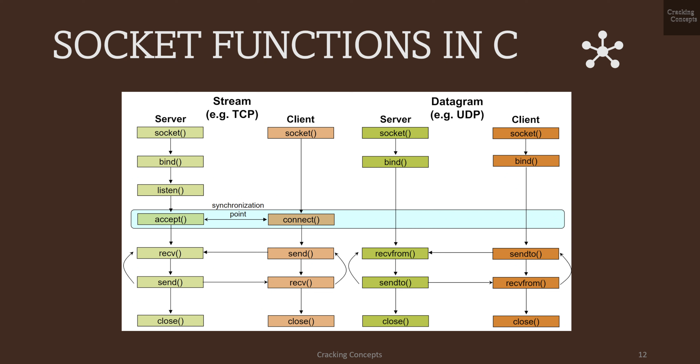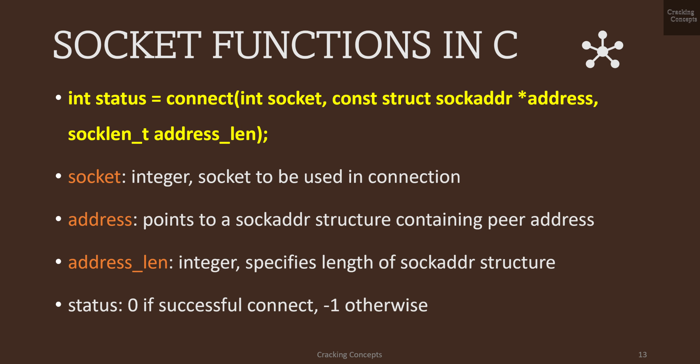The client sends a connect request to the server, which then executes the accept function. Looking at the connect function: it has three arguments — the file descriptor, a pointer to the address structure, and its length. The connect function attempts to make a connection to the particular socket. If successful it returns 0, else minus 1.